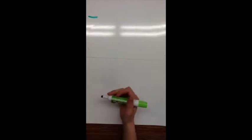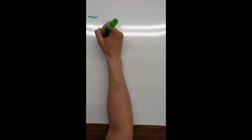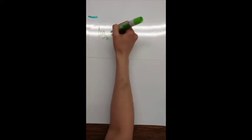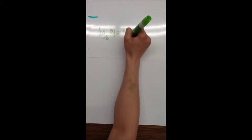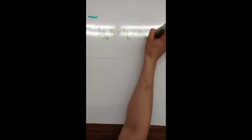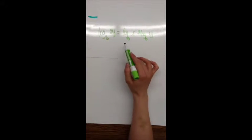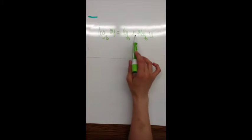We're going to take a look at how to condense log expressions into one log. There are three main rules. If you have log base b of xy, it can be written as log base b of x plus log base b of y. These are similar to our exponent rules — if you're multiplying, you're going to add in between.